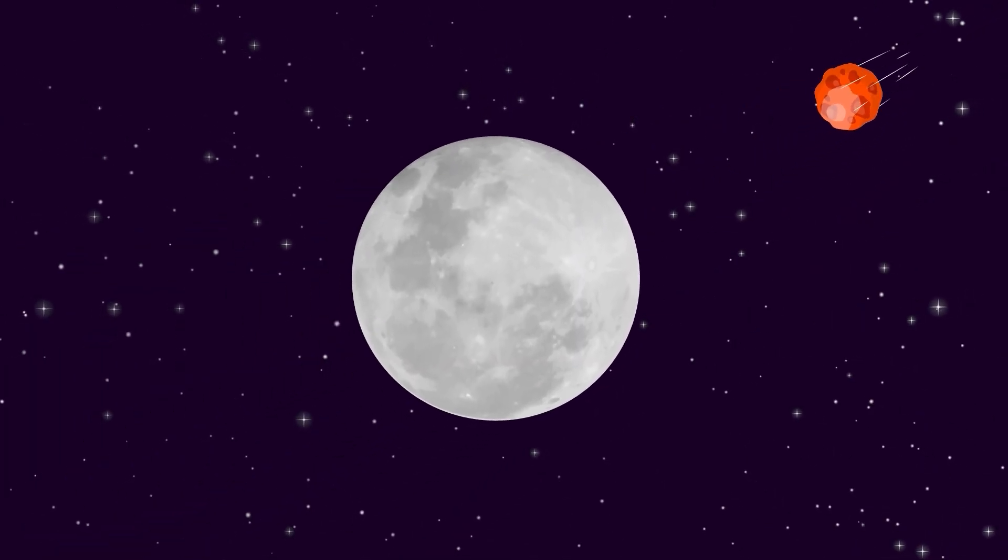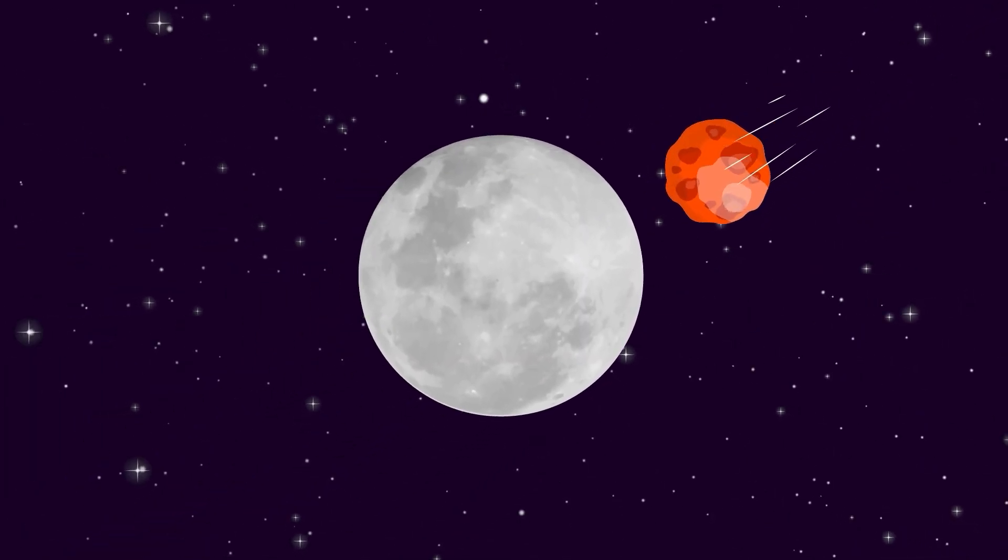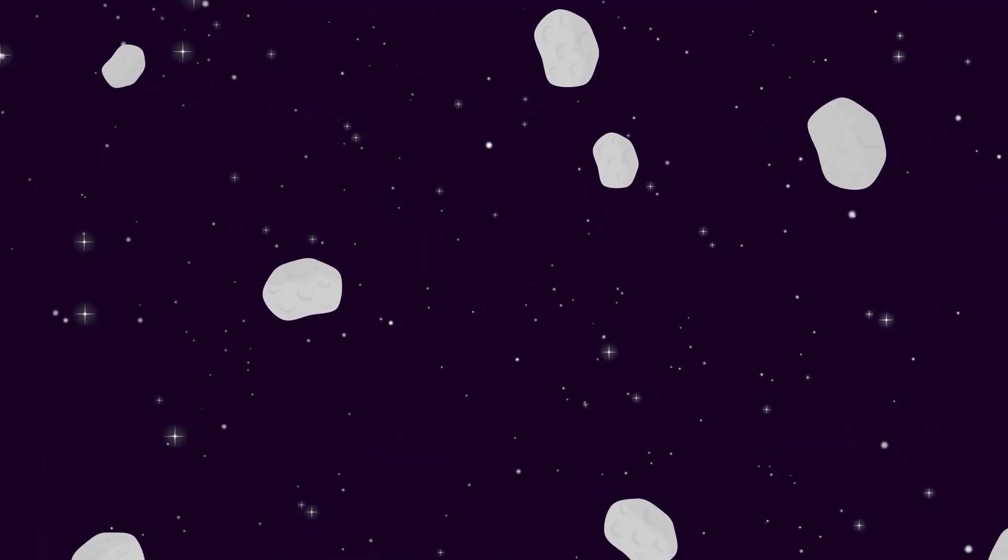If the blast from the asteroid was weak, though, parts of the moon could potentially reform into one smaller moon. But if there's enough power to completely obliterate our lovely lunar friend up there, we'd be looking at some serious chunks of space rock raining down into our atmosphere.